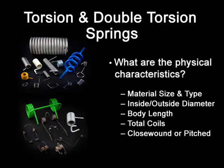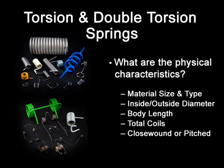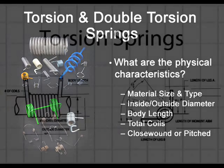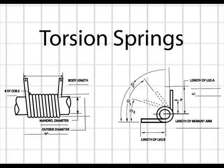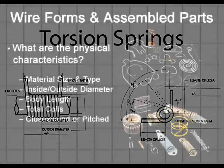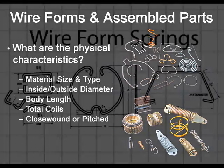Torsion springs and double torsion springs are used to apply torque. Depending upon assembly, energy can be supplied in a pulling or pushing force. Wire forms are designed with a wide variety of shapes to perform many functions. There are no general design equations for wire forms.